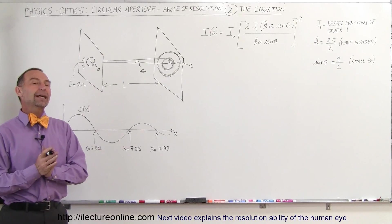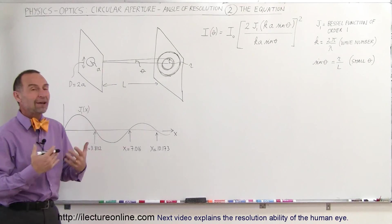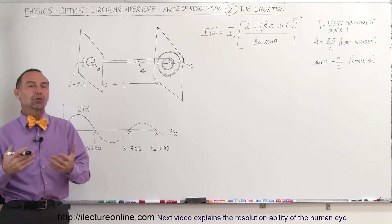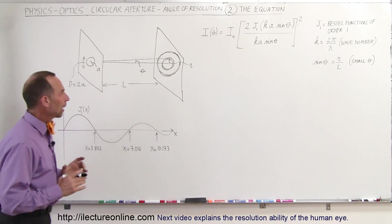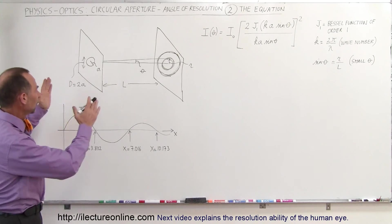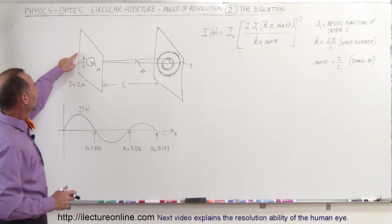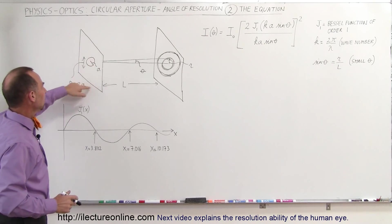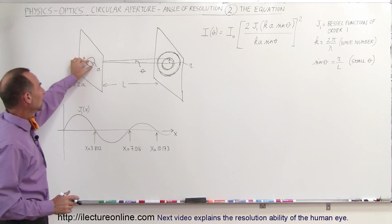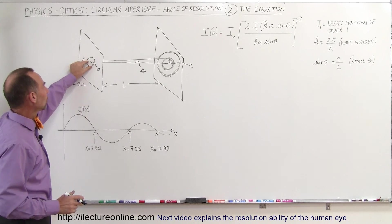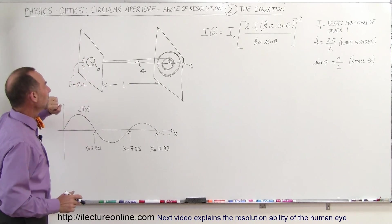Welcome to our lecture online. Now we're going to show you how we derive the angle of resolution equation for circular apertures. Here we have pictorially what this means: we have a screen that has a very small hole in it. The radius of the hole is a, and the diameter of the hole is d, which is equal to 2a.